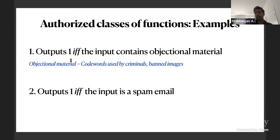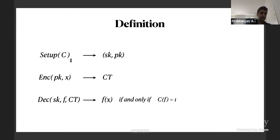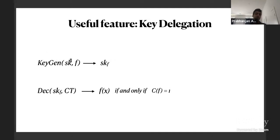Two broad categories of functions to consider: functions deciding whether input contains objectionable material — such as commonly used criminal code words or illicit content — and functions classifying whether a message is spam or not. The encryption algorithm is standard; the decryption algorithm takes the ciphertext and function f and outputs f(x) if and only if f is authorized.